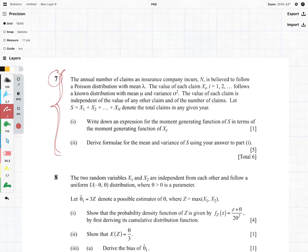The question reads as follows. The annual number of claims an insurance company incurs, N, is believed to follow a Poisson distribution with mean lambda. The value of each claim, xi,